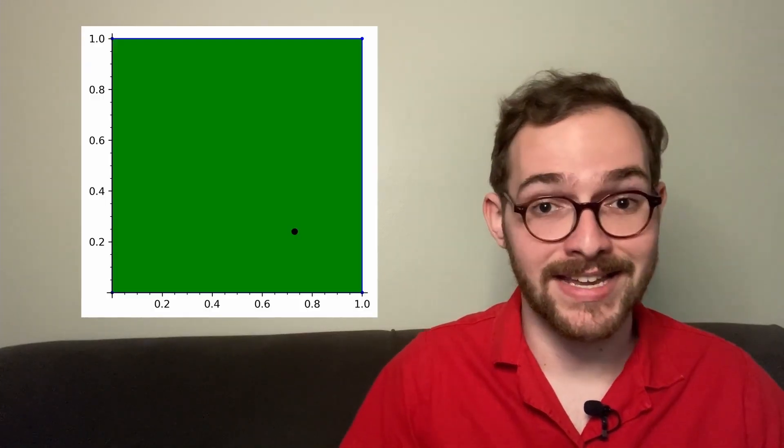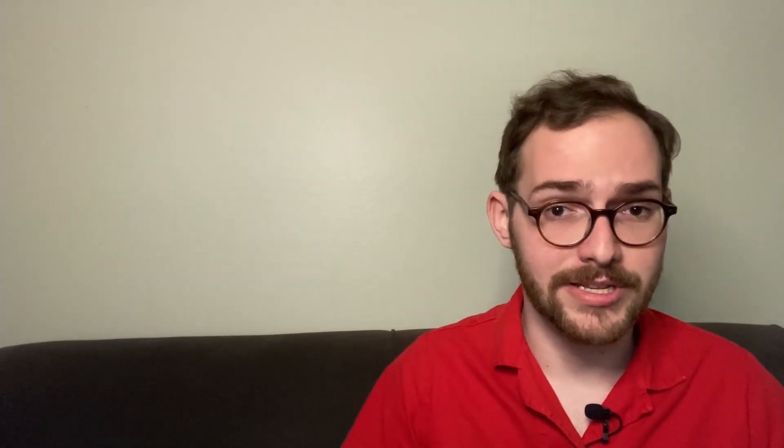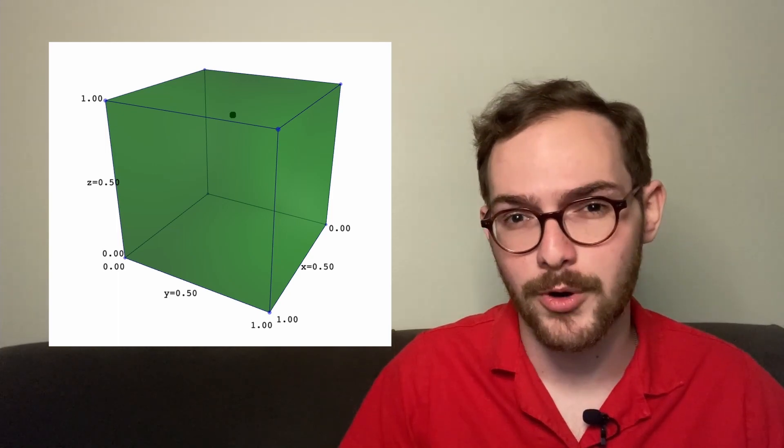So for example, this square is two-dimensional because it takes two numbers, the x and the y-coordinate. Similarly, this cube is three-dimensional because this time it takes three numbers, the x, y, and z-coordinate.